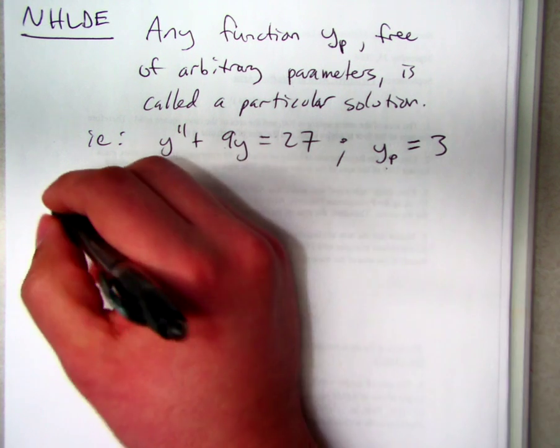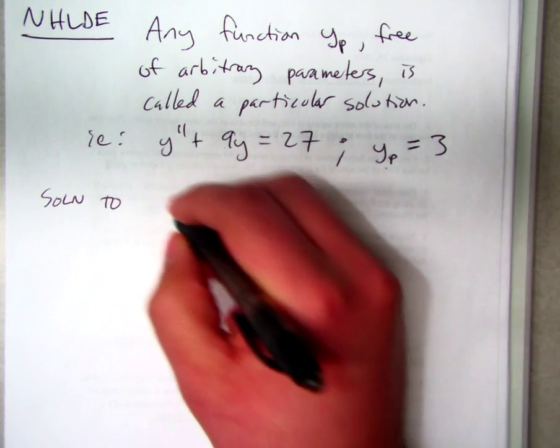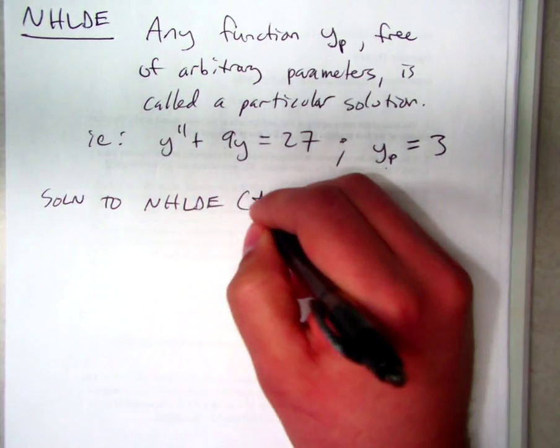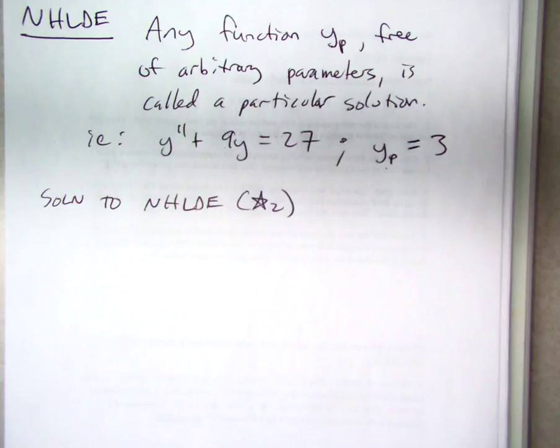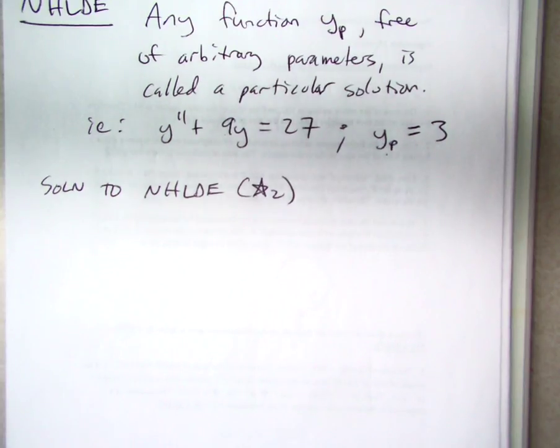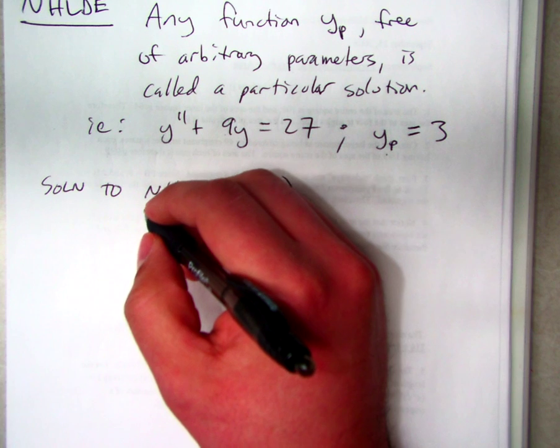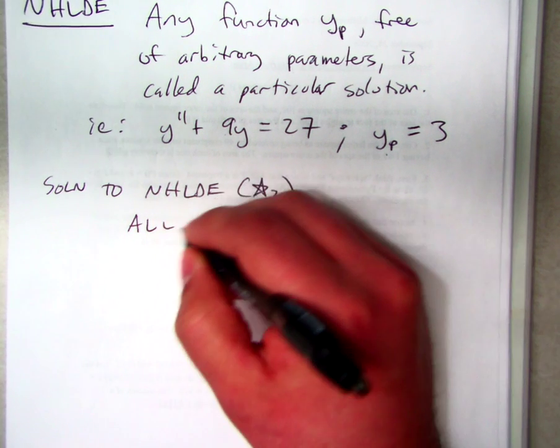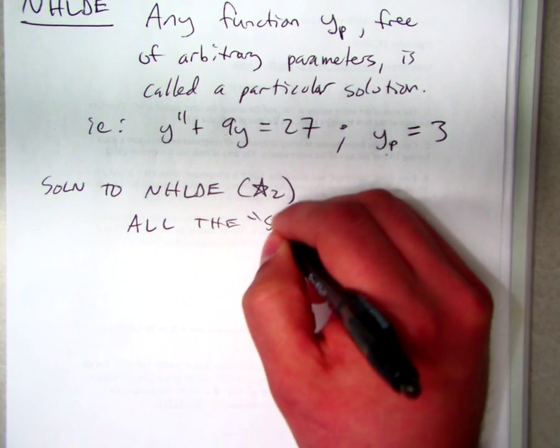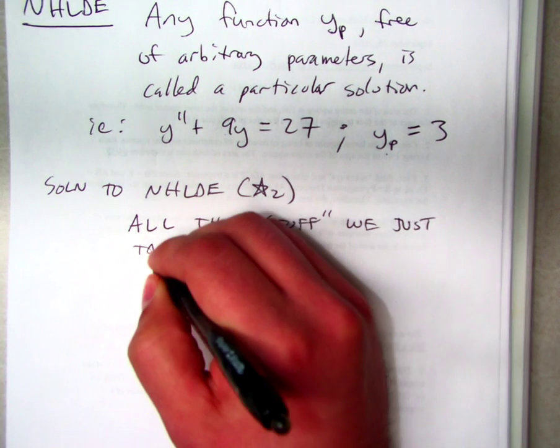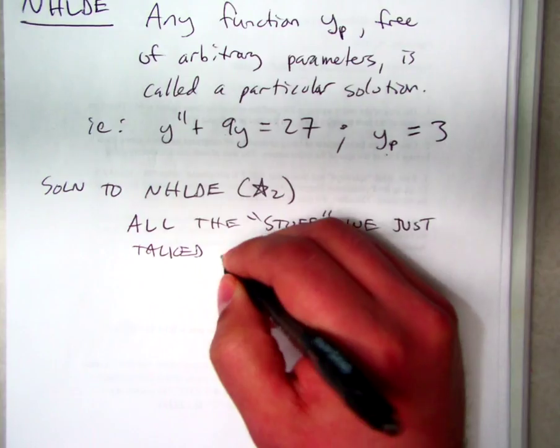Now the solution to the non-homogeneous linear differential equation, which was star 2. So basically all the same stuff we just talked about, except now instead of equaling 0, it equals some function, right? G of x, or a constant. To save some time, I'm going to say this. All the stuff we just talked about is the same.